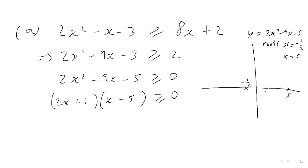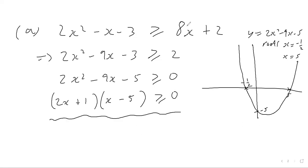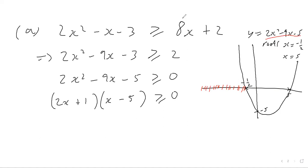So we have a root at negative one half and a root at 5, and a y-intercept of minus 5. We can roughly sketch this curve. Where is this graph greater than or equal to 0? From the sketch, the curve is greater than the x-axis when x is less than or equal to negative one half, and also when x is greater than or equal to 5 — in those regions the expression is greater than 0.